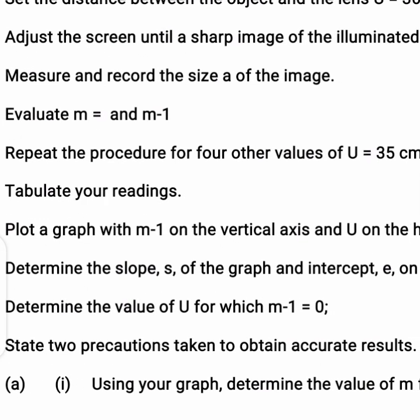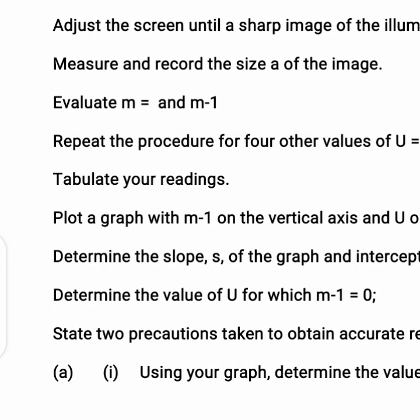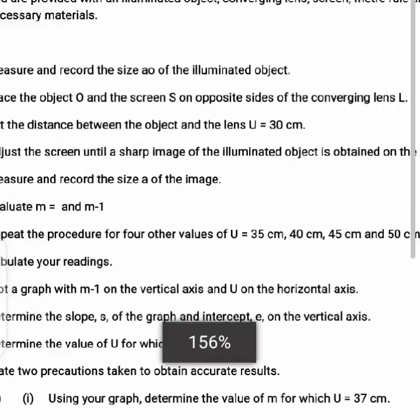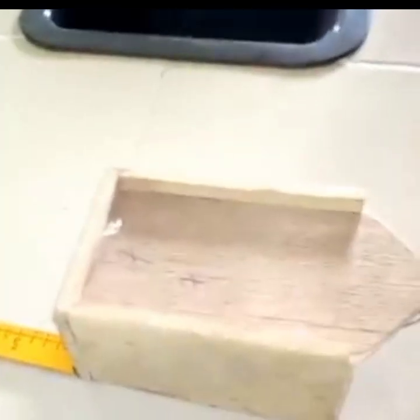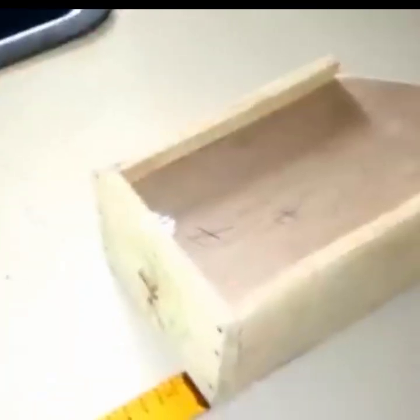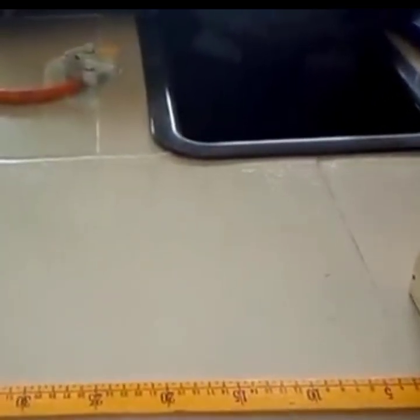The question also says: using your graph, determine the value of m for which u is 37. There is a theoretical question that says sketch a diagram to illustrate how a converging lens may be used to produce a real diminished image of an object. Now let's look at how the practical looks like. The experiment is about to start — you can see the ray box, the meter rule, the lens holder and lens at the center, and the screen.